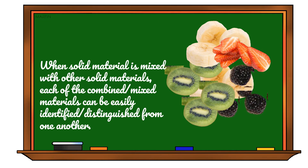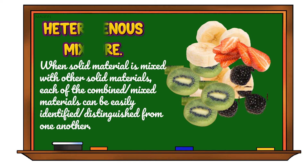Class, when a solid material is mixed with other solid materials, each of the combined or mixed materials can be easily identified and distinguished from one another. We call that a heterogeneous mixture.